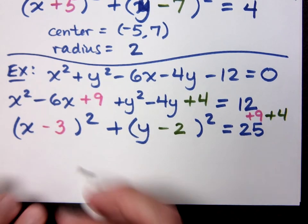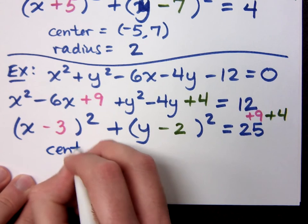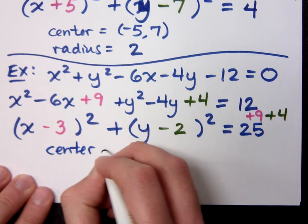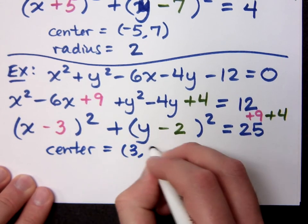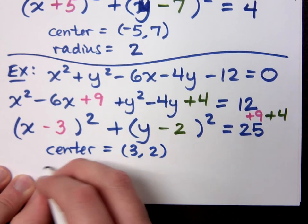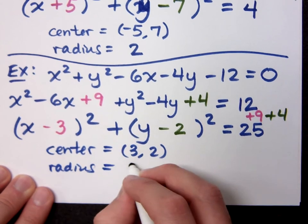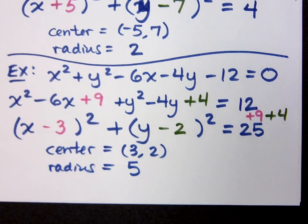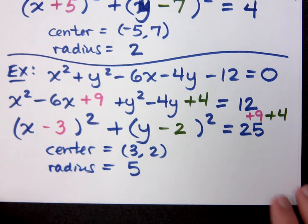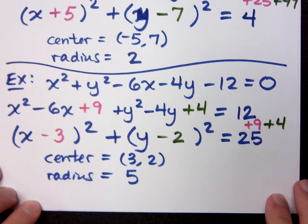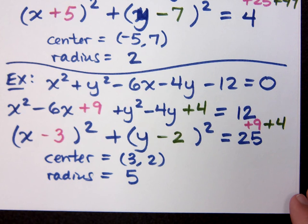So now identify the center. What's the center? 3, 2. And the radius is 5. The radius is 5. Any other questions about how I went from the general form to the center-radius form? Center is 3, 2 and the radius is 5.